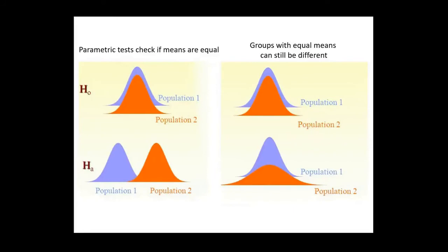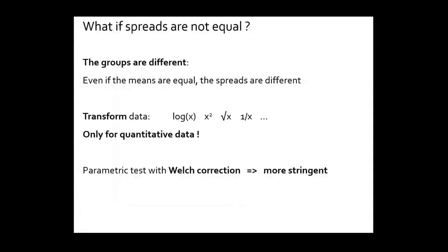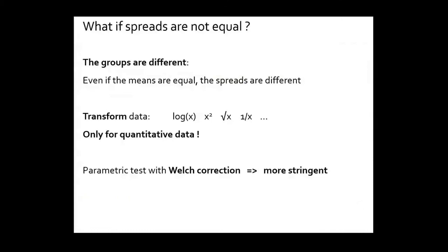From a statistical viewpoint, you should conclude that the two groups are different. But I know that most of you will still want to check the peaks. Are they the same or not? If you still want to check the peaks, you can transform your data, using exactly the same transformations as those you use for normality.